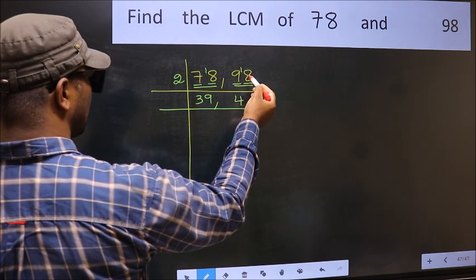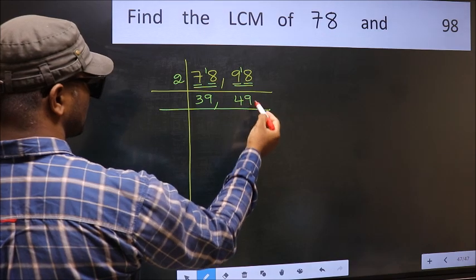9 minus 8, 1. 1 carried forward 18. When do we get 18 in 2 table? 2 nines, 18.